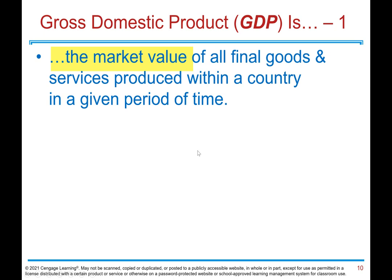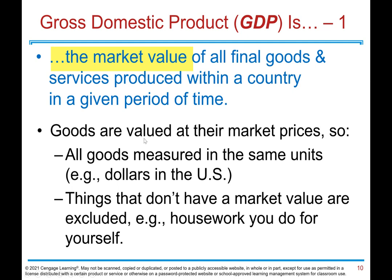So what is Gross Domestic Product? It's the market value of all final goods and services produced within a country in a given year. Market value means goods are valued at their market prices, so all goods are measured in the same unit — for example, dollars in the United States. Things that don't have a market value are excluded, for example, housework you do for yourself.